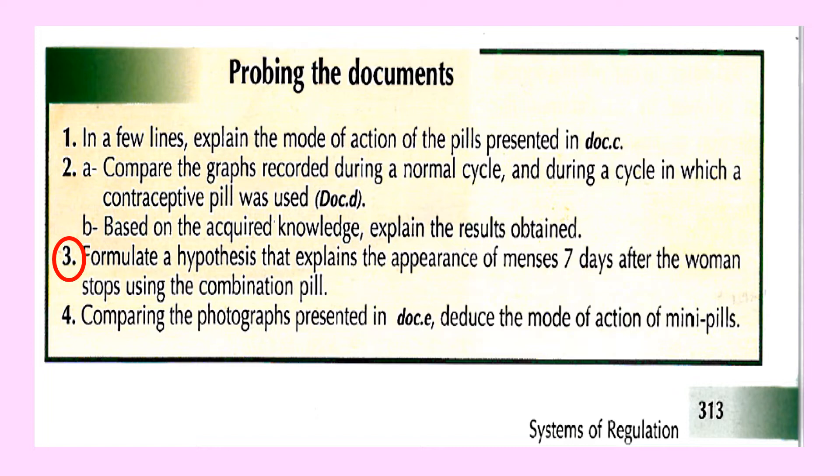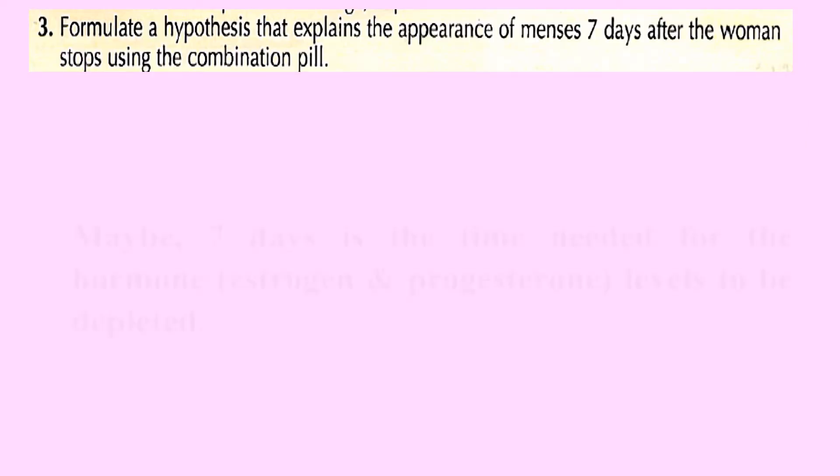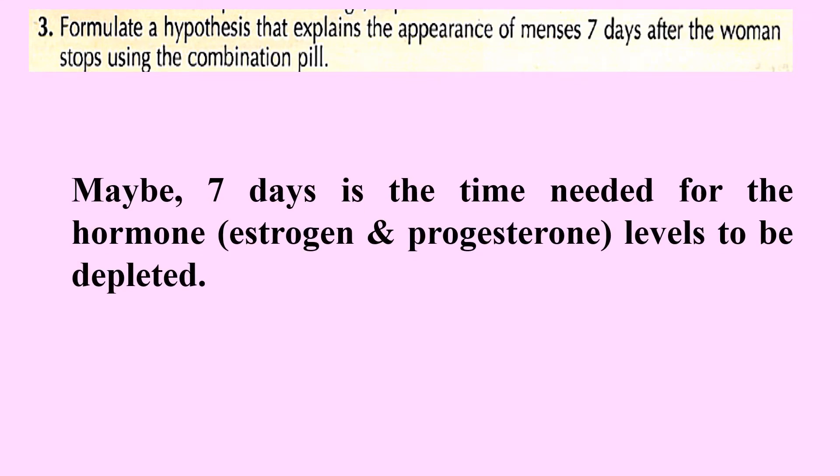After these seven days, the level of estrogen and progesterone will decline and decrease. Once they are depleted from the body, then menses will appear. For the hypothesis I'm going to write: maybe seven days is the time needed for the hormone estrogen and progesterone levels to be depleted. Then menses starts. The first day of menses, the female must take the first pill of the combination pill on day one of the combination pill.